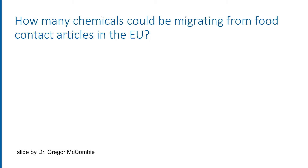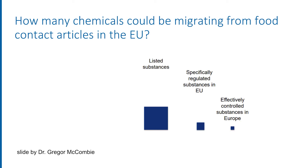So how many chemicals that migrate into foodstuffs are we talking about? This is a slide from Dr. Gregor McCombie, an analytical chemist and enforcement officer working in Zurich at the official Food Control Authority. Here we see that in Europe, about 8,000 chemicals are known to be used to make all types of food contact materials and articles.